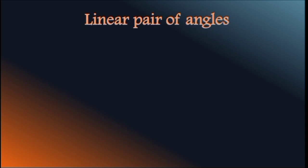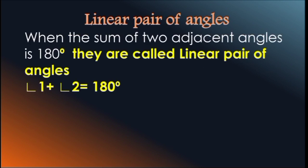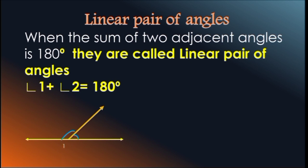Linear Pair of Angles. When the sum of 2 adjacent angles is 180 degrees, they are called a Linear Pair of Angles. Angle 1 plus Angle 2 equals 180 degrees. Look at the figure — Angle 1 plus Angle 2 is exactly equal to 180 degrees. You know already that a straight angle is 180 degrees. This type of angle is called a Linear Pair of Angles.